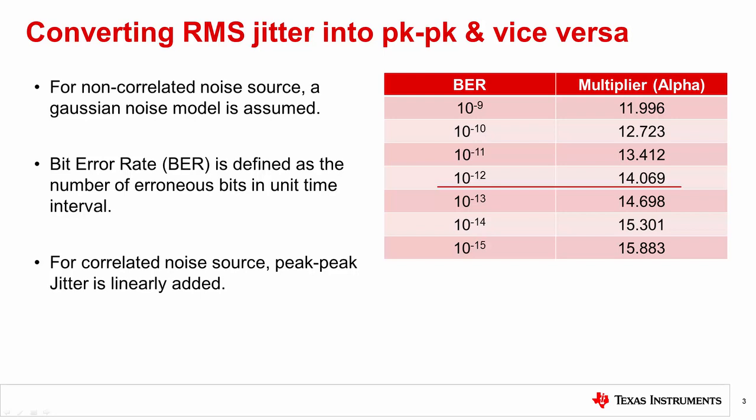For example, a BER of 10 to the minus 12 indicates a maximum error of 1 bit in 10 to the 12 cycles. To convert RMS jitter into peak-to-peak jitter, a BER multiplier is used based on the assumption of a Gaussian noise model. For a BER of 10 to the minus 12, peak-to-peak jitter is equal to 14.069 times the RMS jitter. For other BERs, peak-to-peak jitter can be calculated from RMS jitter based on the multiplier shown in the table here.